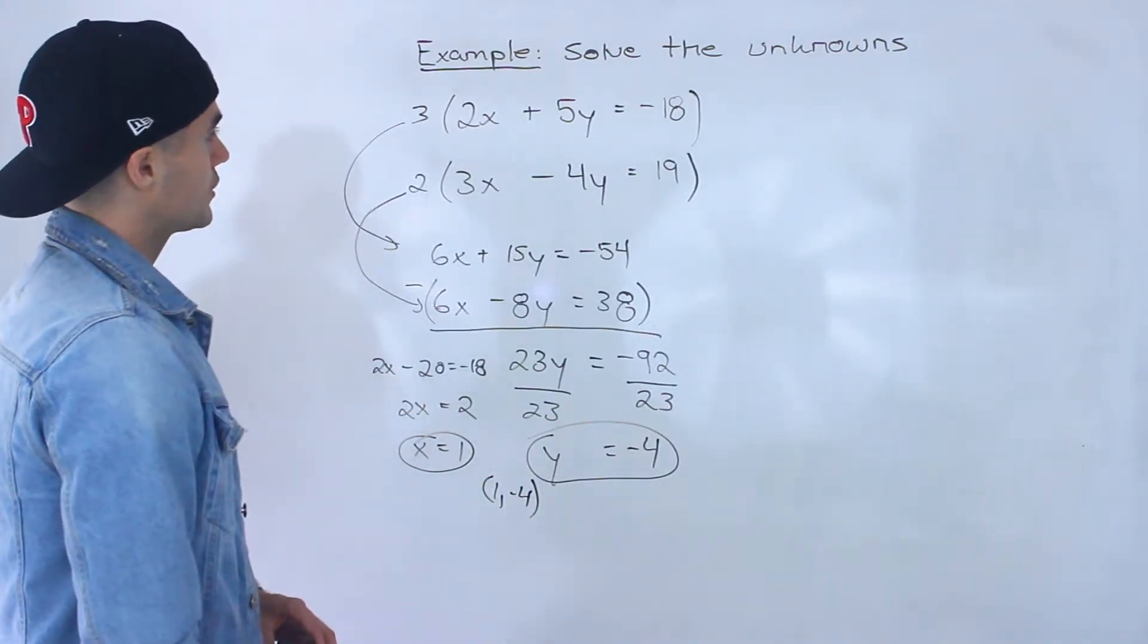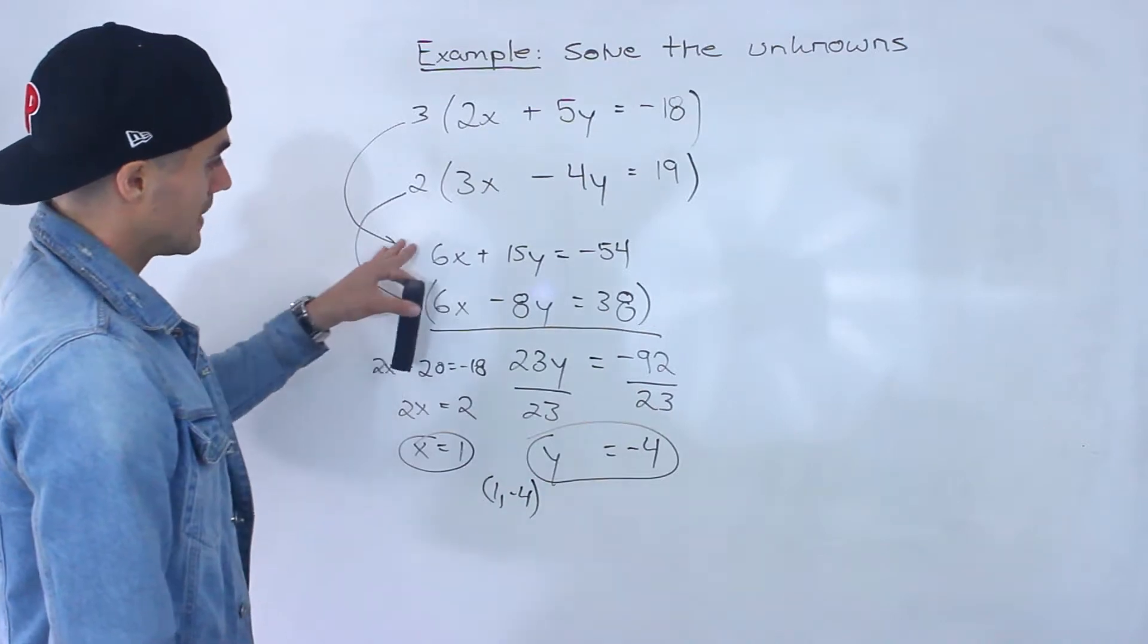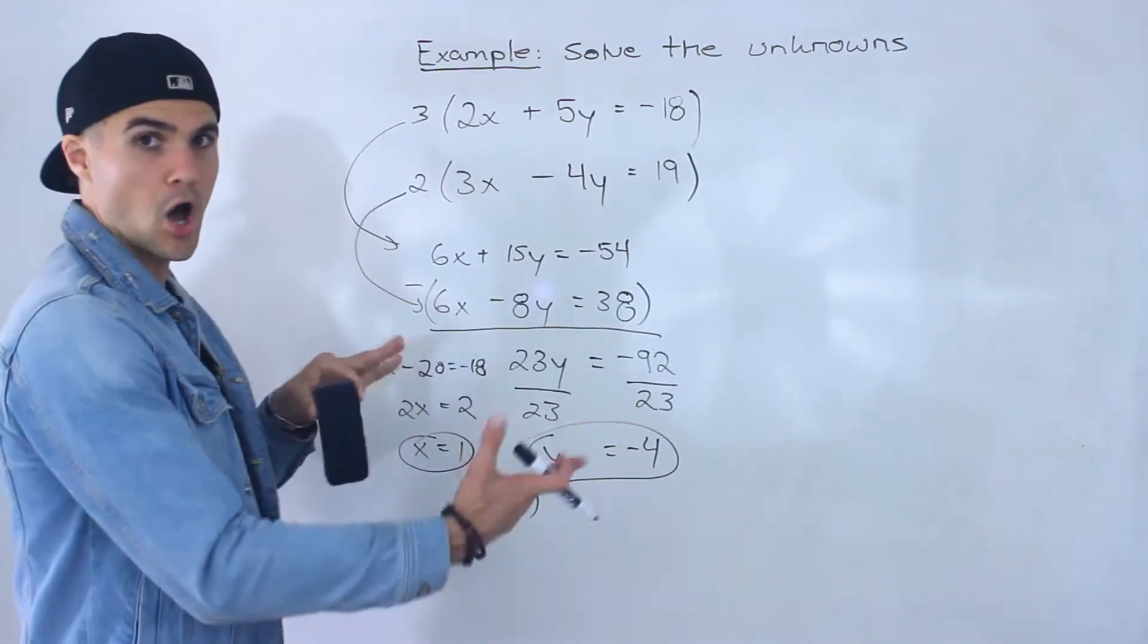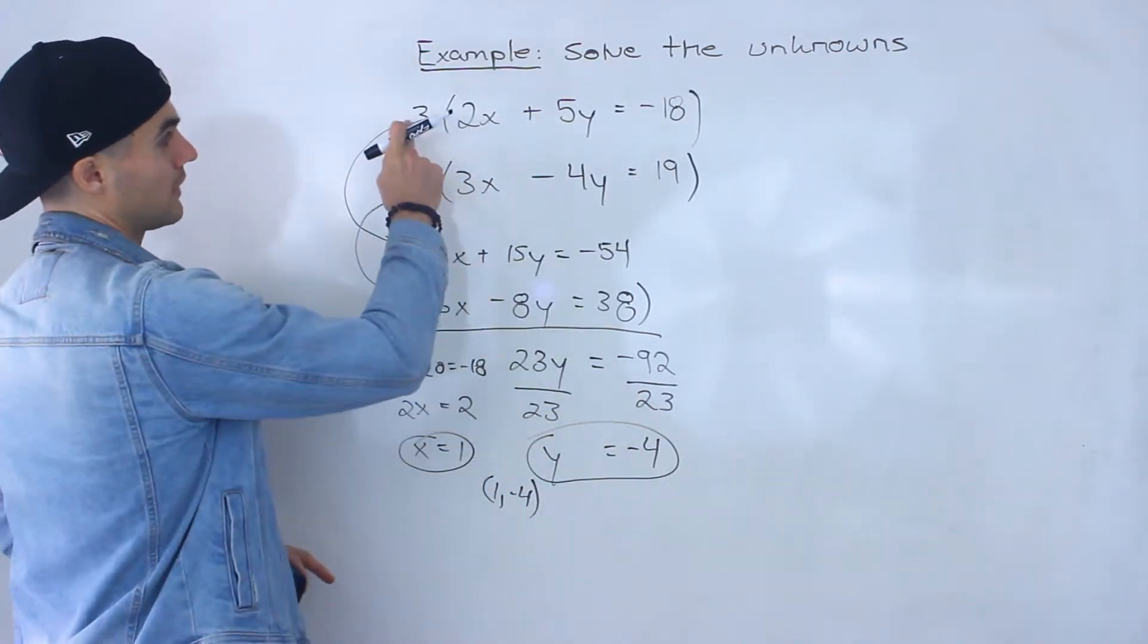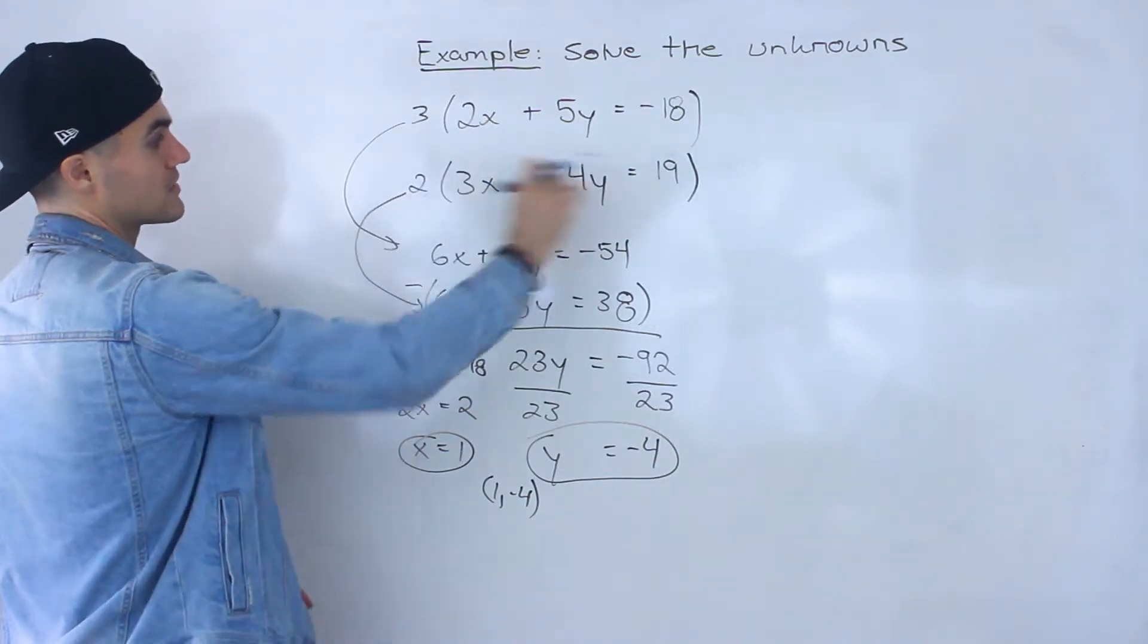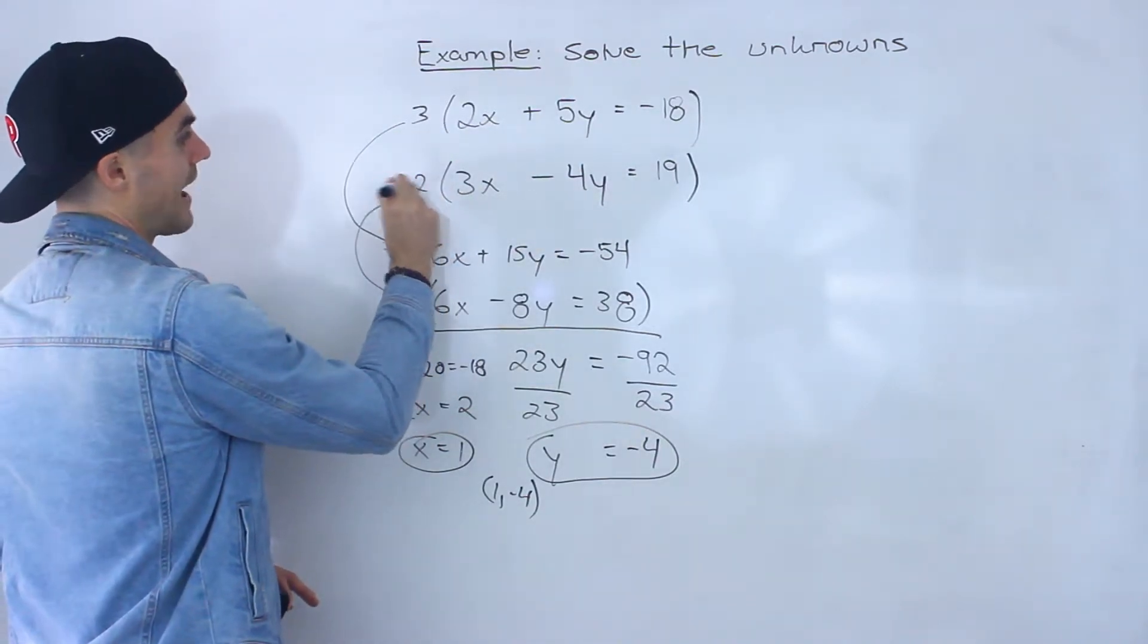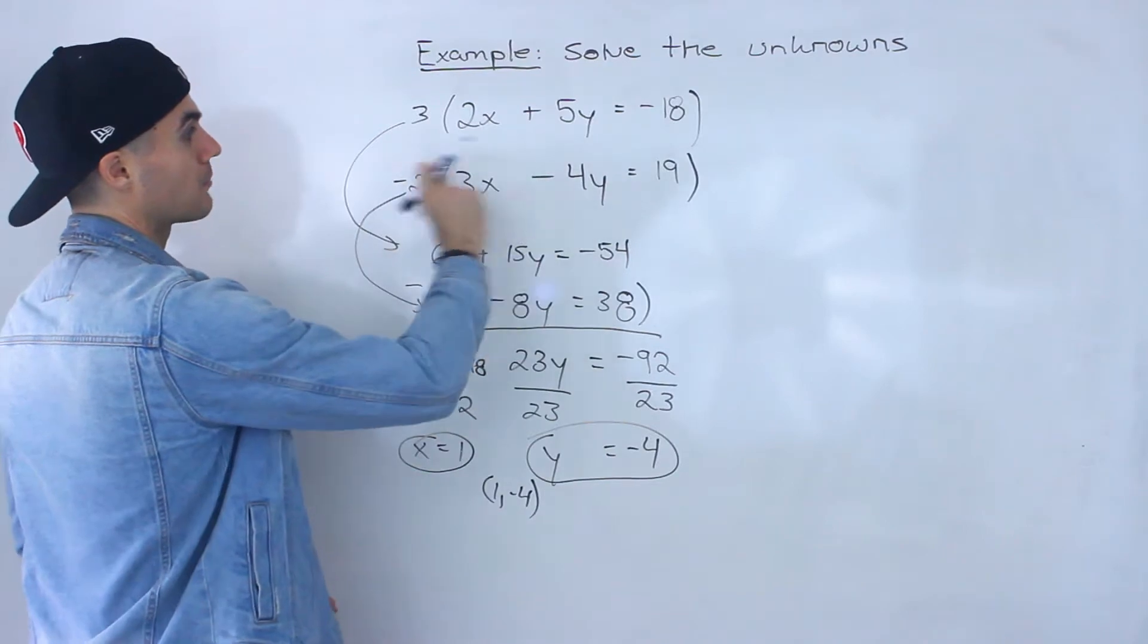Right another way you could have done this is instead of making them the same sign you could have made them opposite signs. So I could have maybe multiplied all this by negative 3 or all of this by negative 2. So if I did that let's say I multiplied everything here by negative 2.